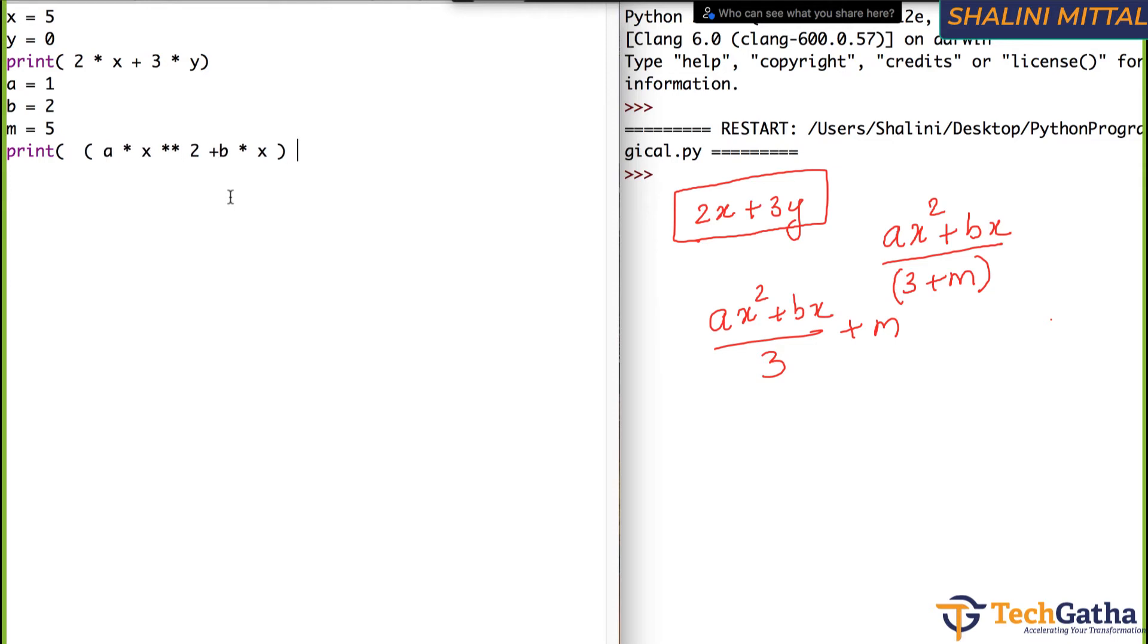And then divide by 3, the spaces aren't important. I am just writing it so that it makes it understandable. And then plus m, close. This is how you write.